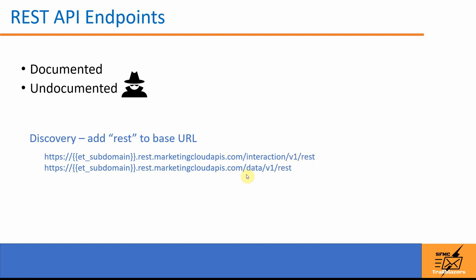For example, for contacts it will be like contact slash v1, for data it is data slash v1, and so on. After that version number you just have to append the REST keyword.